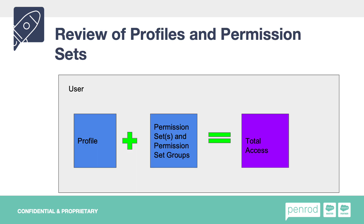A quick review of profiles and permission sets. Remember, a user has a profile, they have permission sets, and also permission set groups. The cumulative of all those is their total access to the org. Profile currently controls a lot of stuff, and then we used to just add on additional permission sets and permission set groups as we see fit. Profile is losing a lot of its access — it's all moving on to permission sets. So the model is still going to be very relevant, just most of it is going to be sitting around the permission sets and permission set groups.